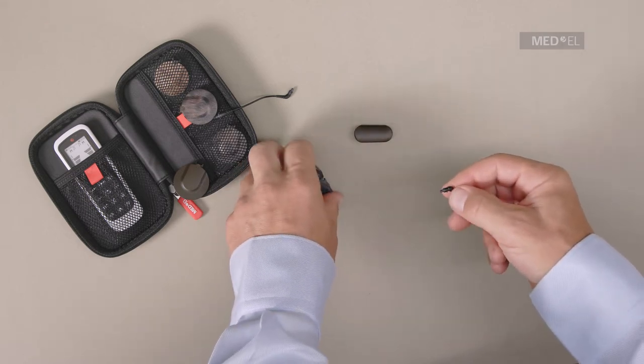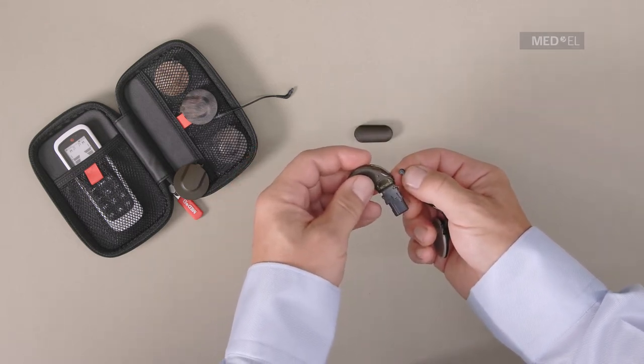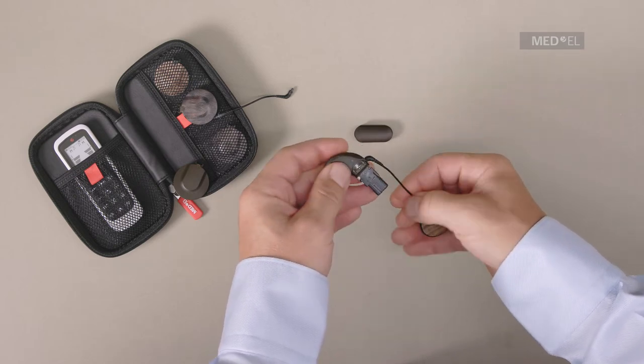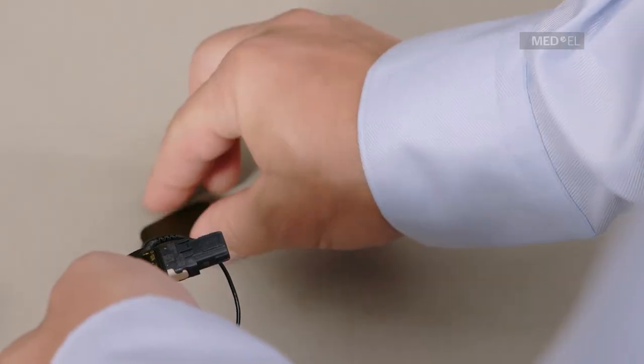Plug the new coil cable into the audio processor, noting the correct orientation of the coil cable plug. Finally, slide on the battery pack cover.